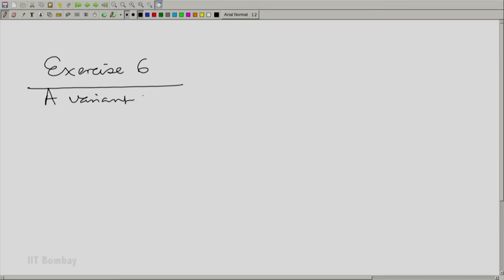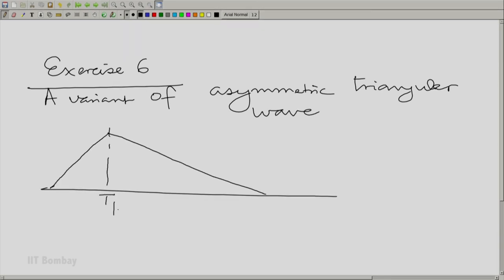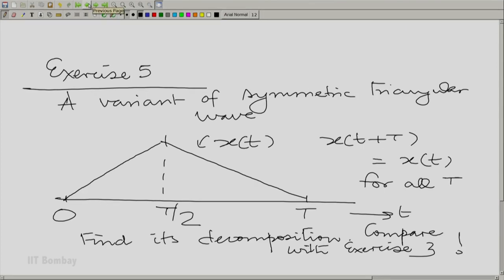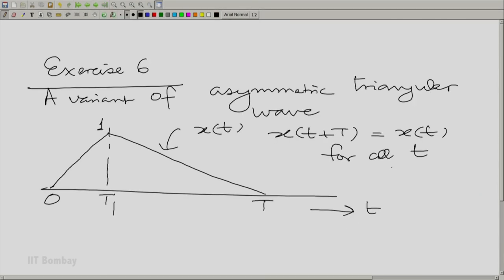And the last exercise, a variant of the asymmetric triangular wave. So, it rises to 1 but then falls and the rise and fall are on different subintervals. By the way, there is a little correction that we should see in the previous exercise. I just noticed it. This should be for all small t. I hope you noticed it too. That is one way of teaching. Anyway, so here we are. The variant of an asymmetric triangular wave. Here, t1 is between 0 and T, but t1 is not equal to T/2. And here again, you could do the same thing. Substitute t1 equal to T/2 and see if you got what you got for exercise 5. And also compare this with what you got for the asymmetric triangular wave shown earlier. Try and explain the differences. That is the challenge for you.